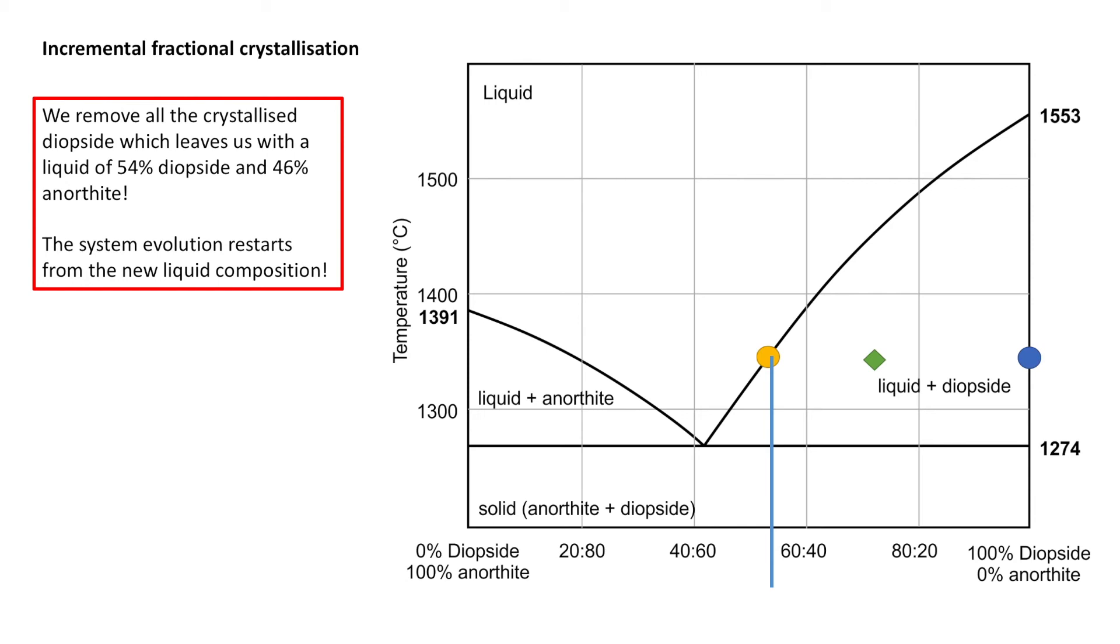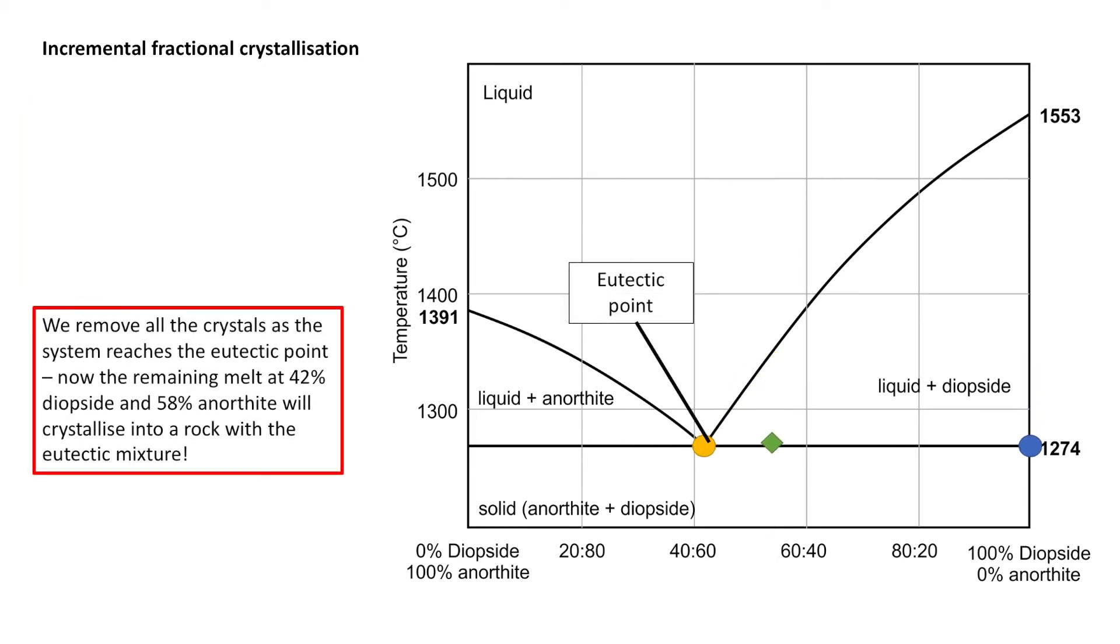When we remove all that diopside, we're left with a liquid of around 54% diopside and 46% anorthite. So now with the removal of all those solids, our system's going to begin again at this point. And then we continue to cool it and we hit the eutectic point.